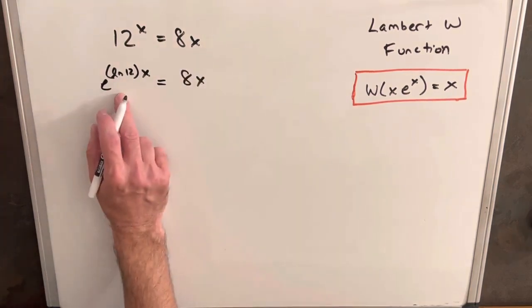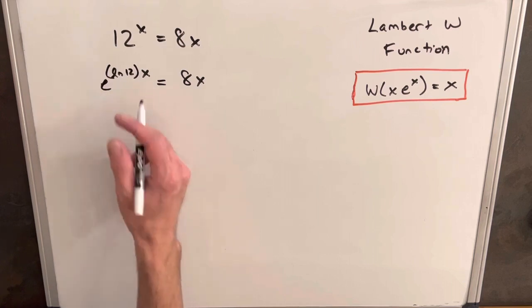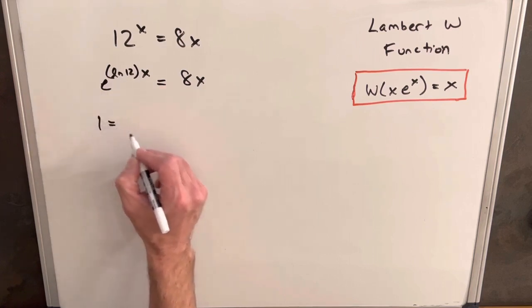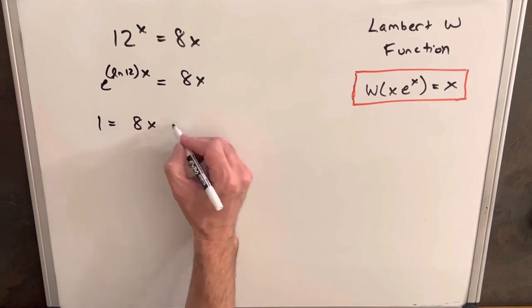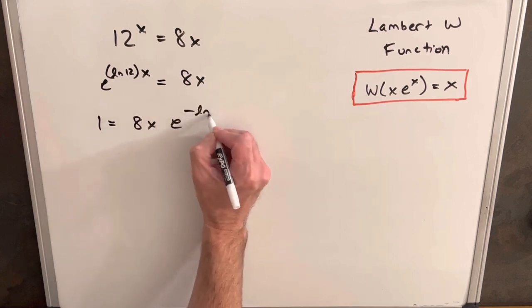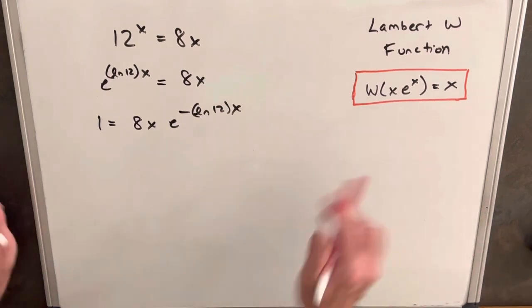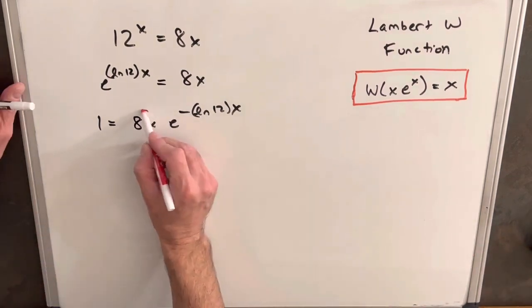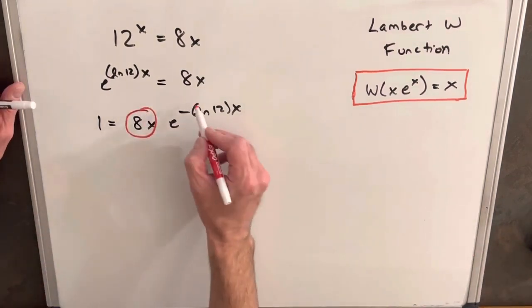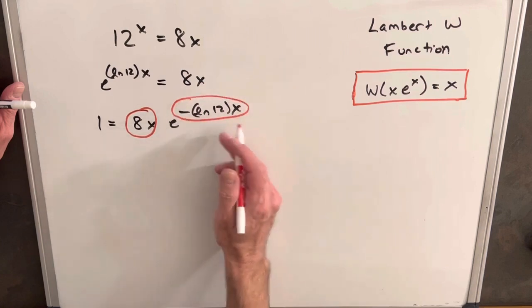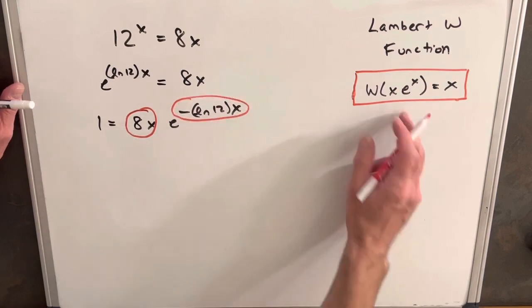So if we divide both sides by e to the ln 12x, on the left side we're going to have just 1. On the right side we're going to have 8x times e to the minus ln 12x. And now you can see we're getting closer to this format we want, but what we need is we need our coefficient and we need our exponent to be the same in order to match this form we have over here.